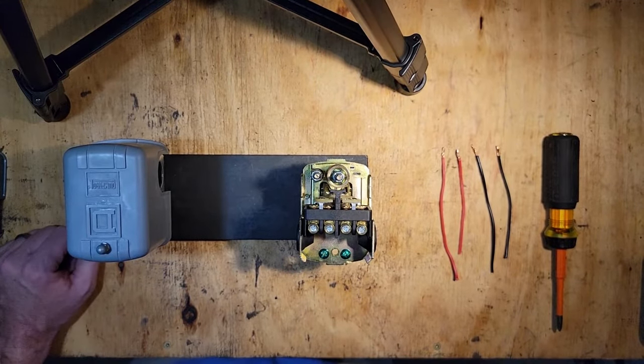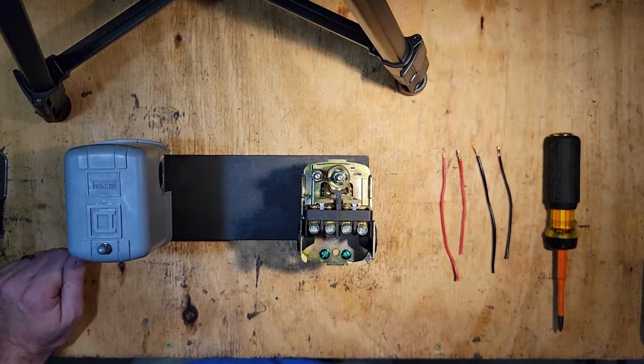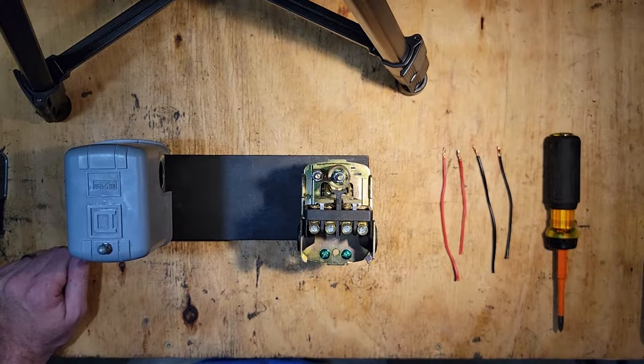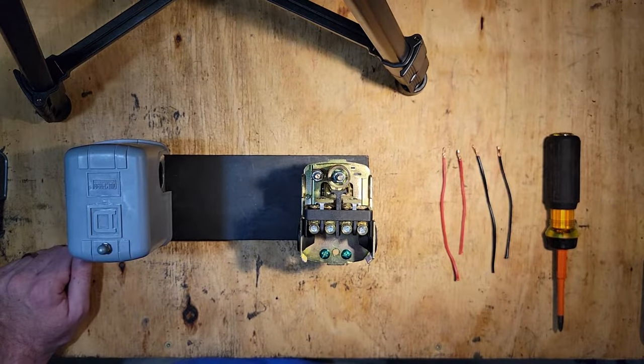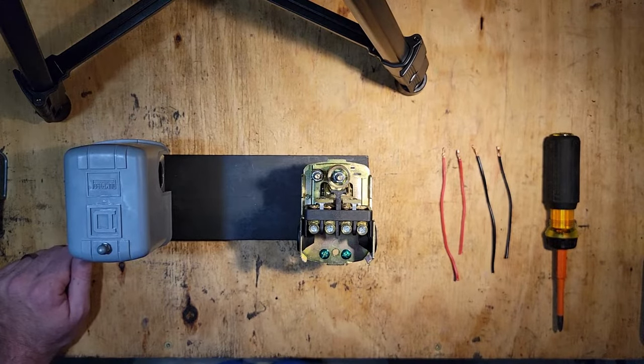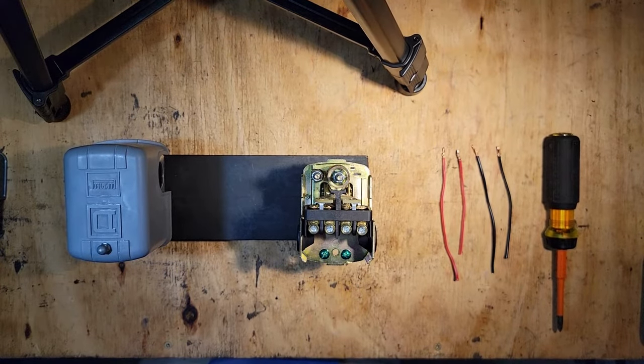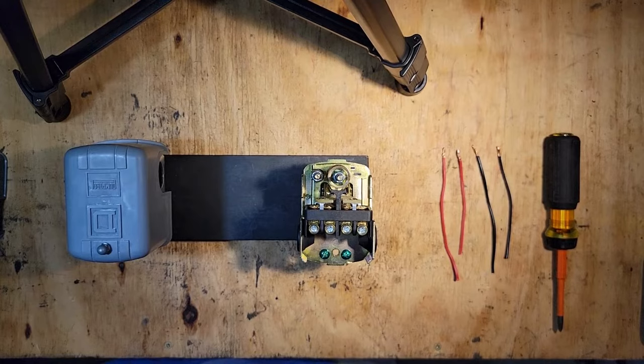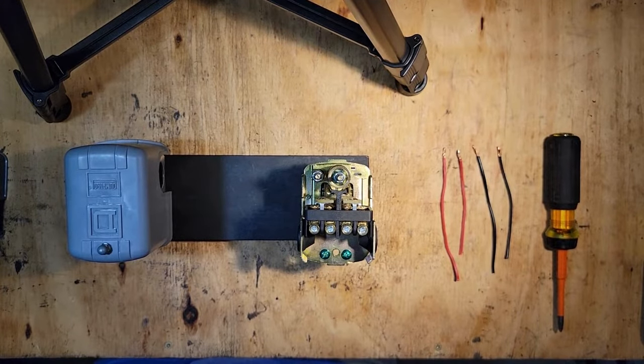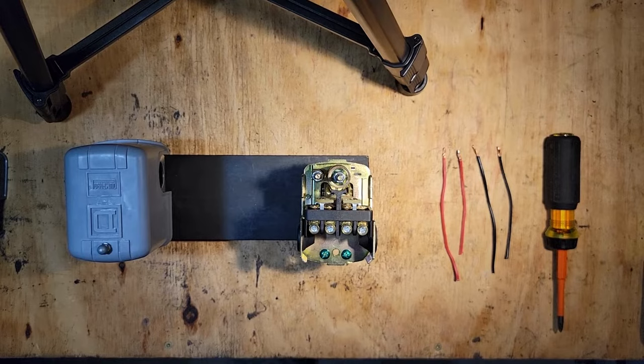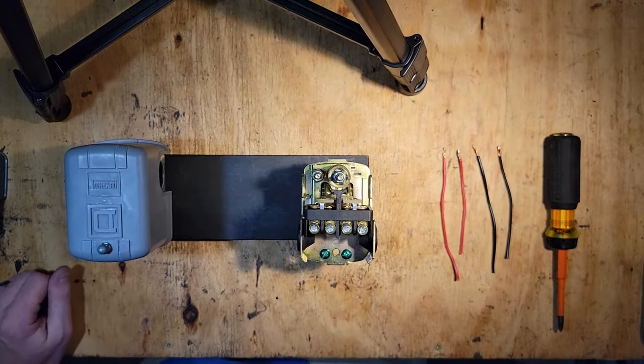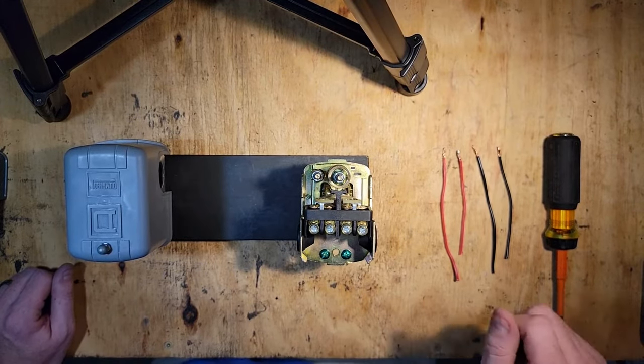If you look at the control box inside, there will be a terminal strip where all your wires are connected. If you see a terminal that's labeled SW, that means you have what's called a deluxe control box and it has a switch relay in it.